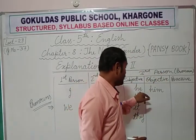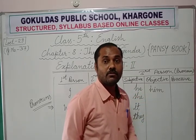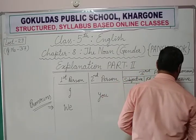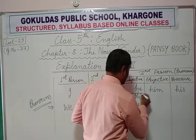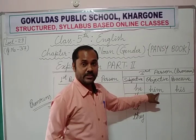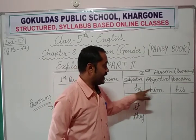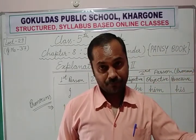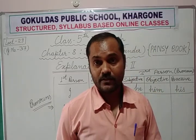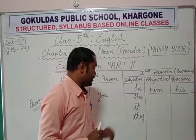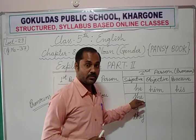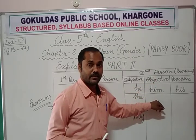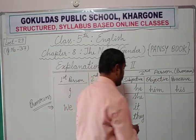For boys: subjective is he, objective is him, and possessive is his. Whose pen is this? His pen. You should remember that him is used for male gender in objective case. He is used especially for boys and men — any male. His is the possessive form. For girls: she is used for female category. In objective case, we use her. So 'I am giving my pen to her' — her is the objective case for females.